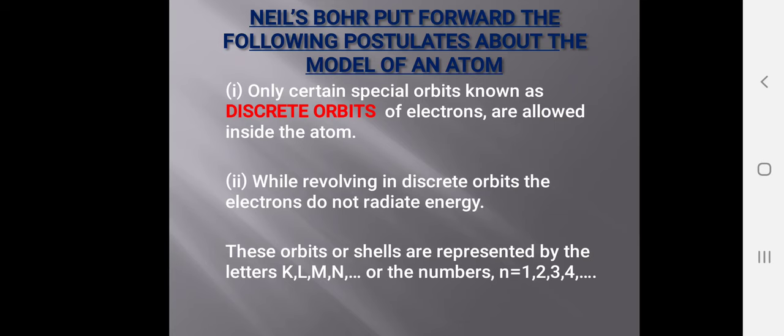These orbits or shells are represented by the letters K, L, M, N, O, P, and so on, or by numbers: N=1, N=2, N=3, and so on. These two postulates are the core of Bohr's model — keep them in mind.